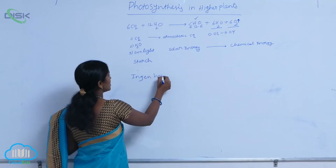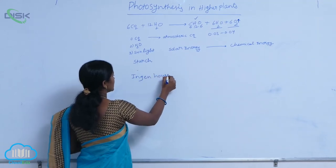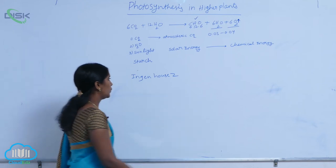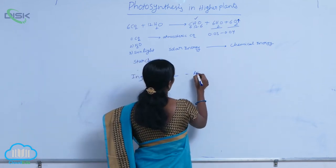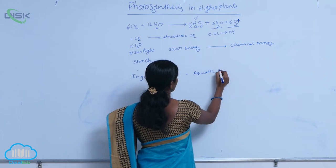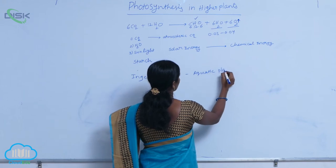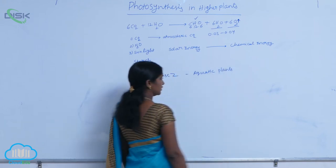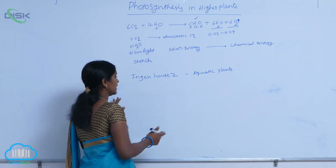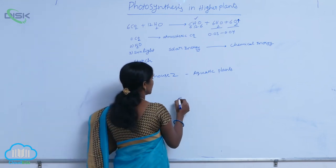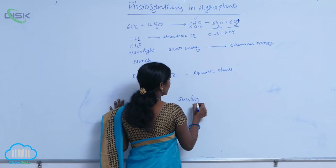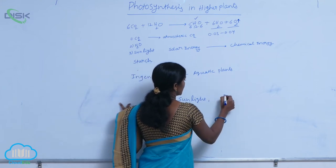Ingen Housz, a scientist, conducted an experiment with aquatic plants. He kept the aquatic plants in sunlight as well as in the dark.